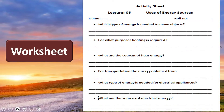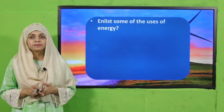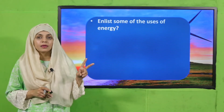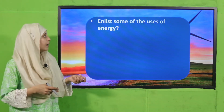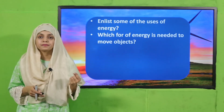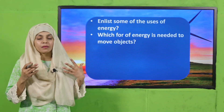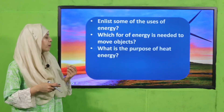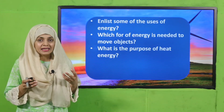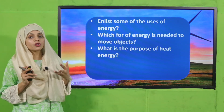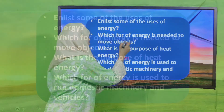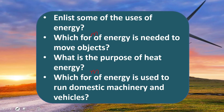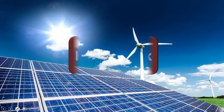Let's move forward towards evaluation. Quickly answer: list some uses of energy — heating, lighting, transportation. Which form of energy is needed to move objects? Petroleum, electricity, and heat are all used to move objects. What is the purpose of heat energy? It provides heating and generates electricity. Which form of energy is used to run domestic machinery and vehicles? Electricity is used for domestic machinery, and fuel is required for vehicles.